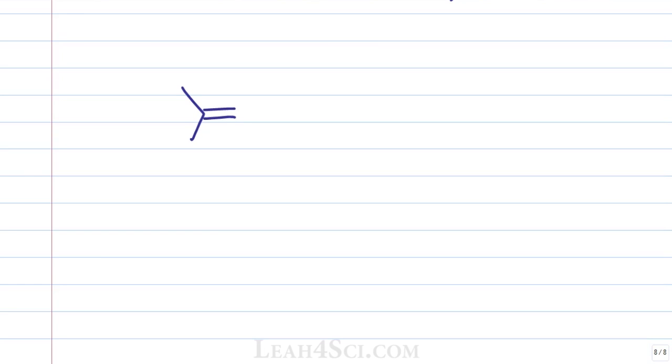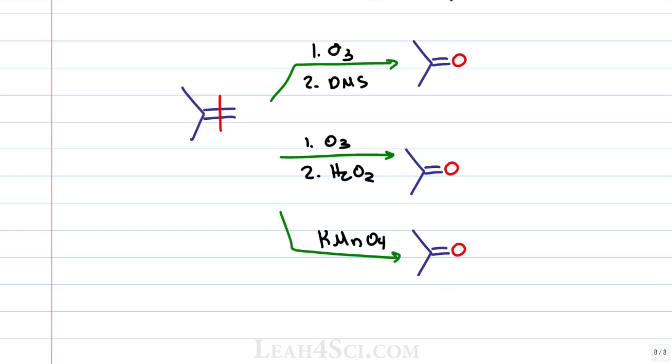Oxidative cleavage on a terminal carbon will give you a single carbon fragment for one of the products. The secondary carbon is going to be the same, a ketone regardless of what you use but the terminal carbon will be different depending on the reagents that we use. Ozonolysis under reductive conditions will give us formaldehyde for that single carbon product and formic acid which is a carboxylic acid under oxidative conditions.